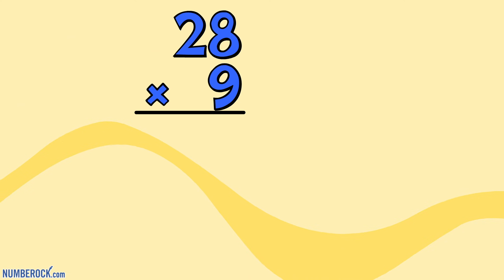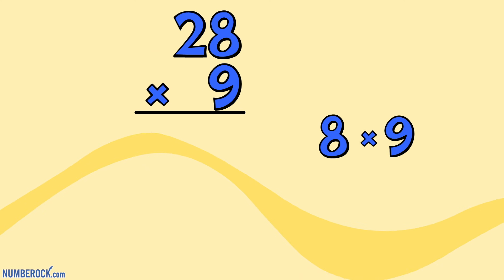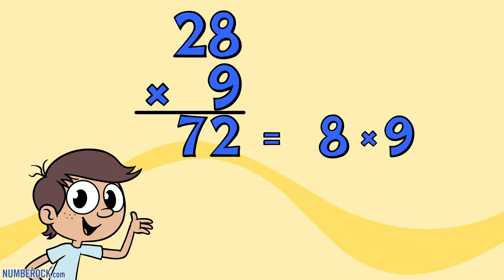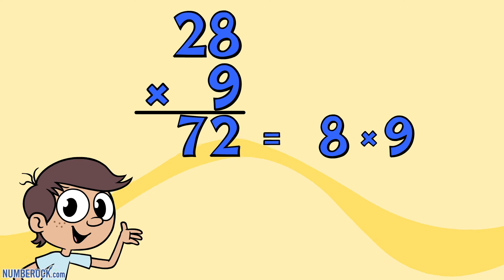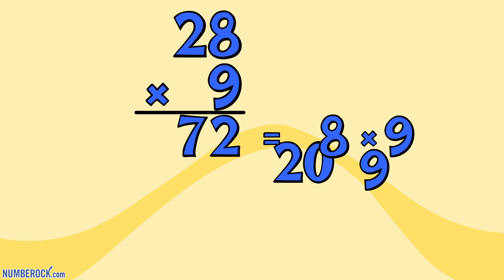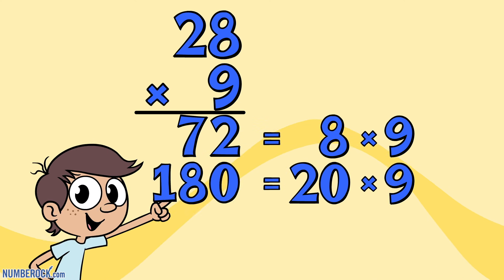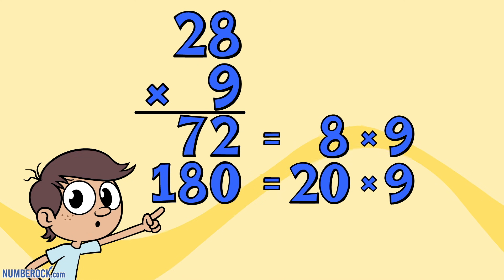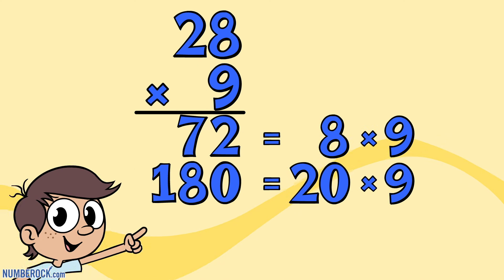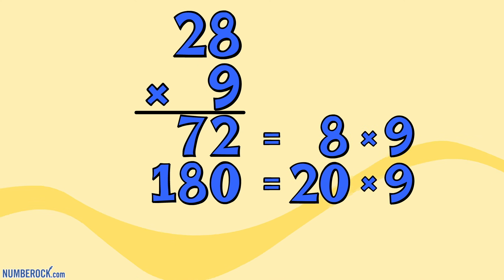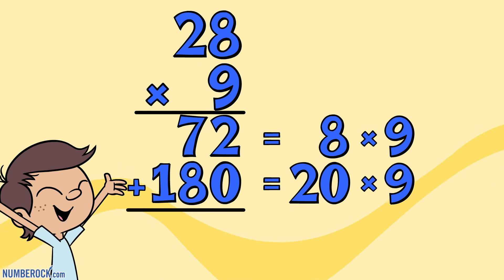28 multiplied by 9: we multiply 8 by 9, getting 72 under the line. Then we multiply the tens — 20 by 9 — giving 180 next to the equal sign. Then it's time to do the final step: we add them up to find 252.